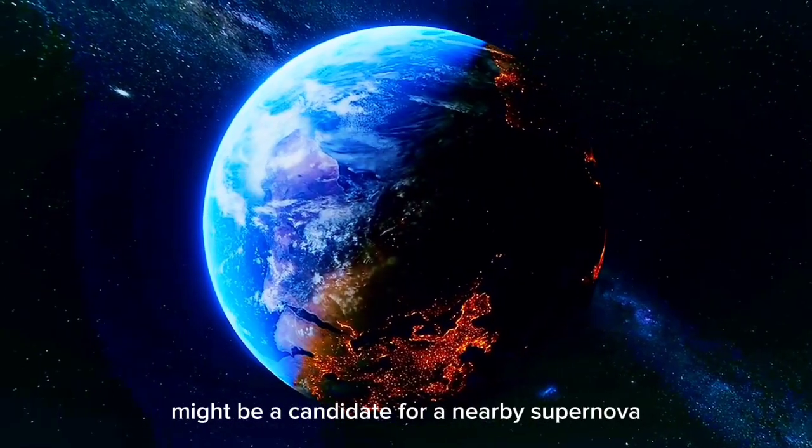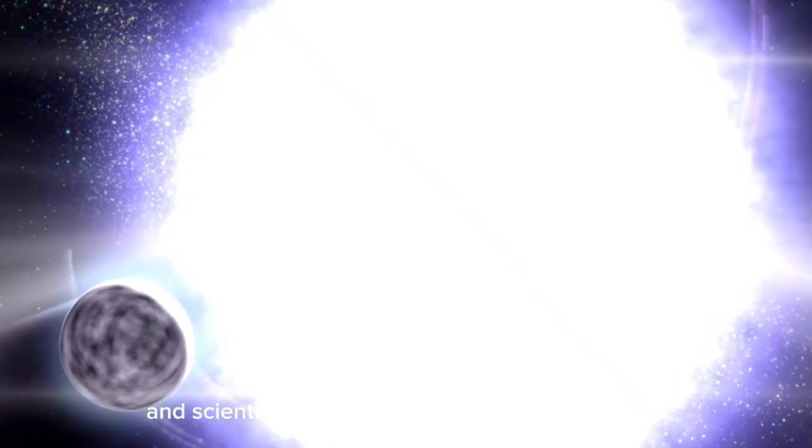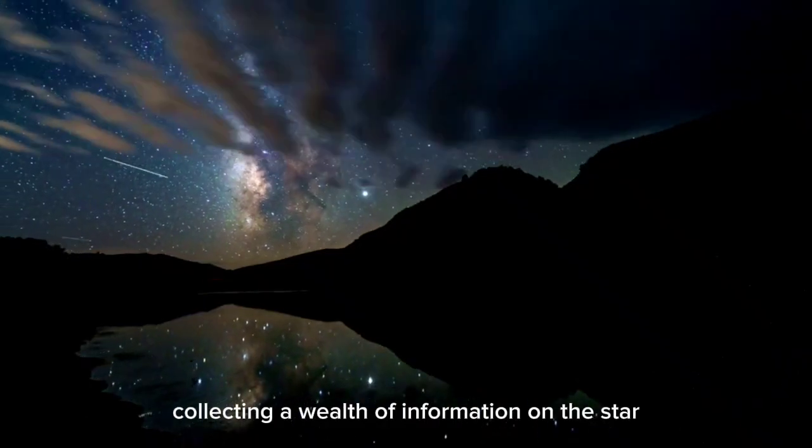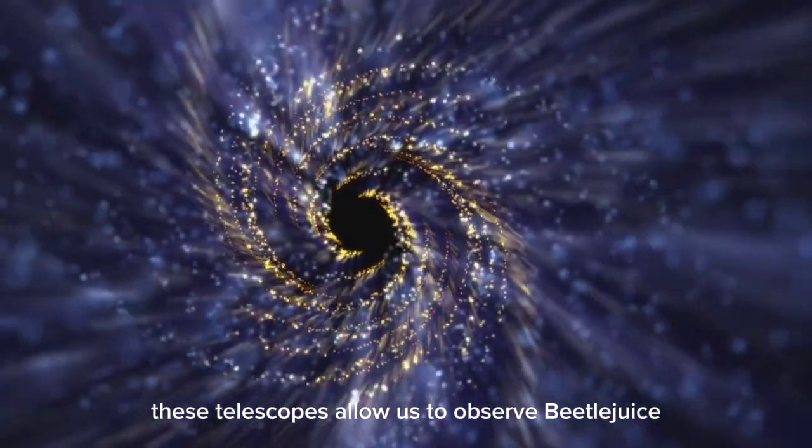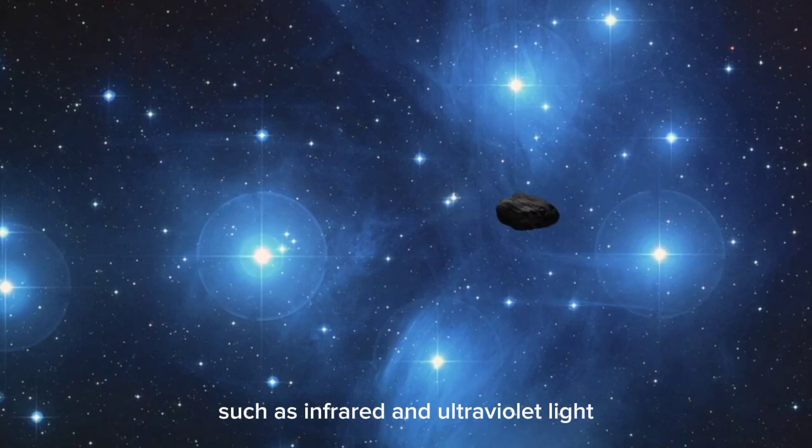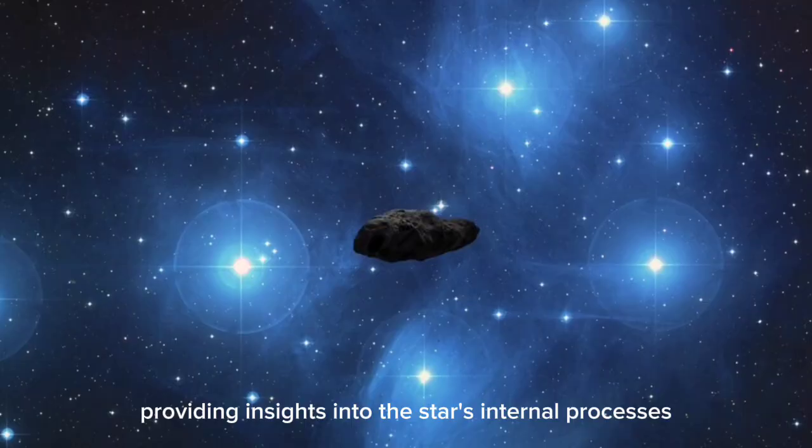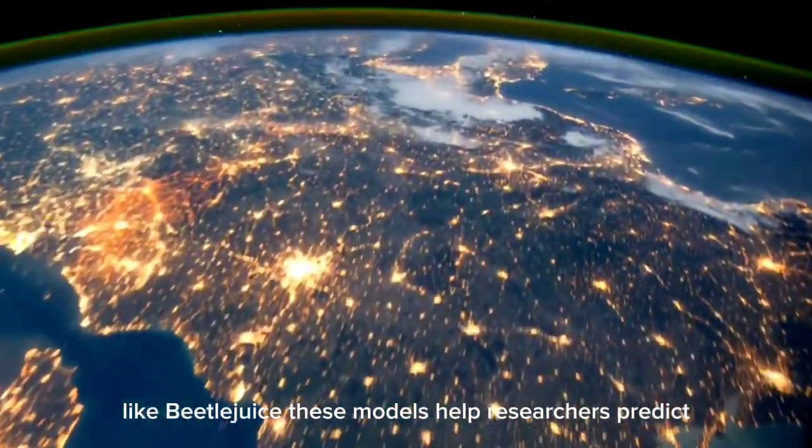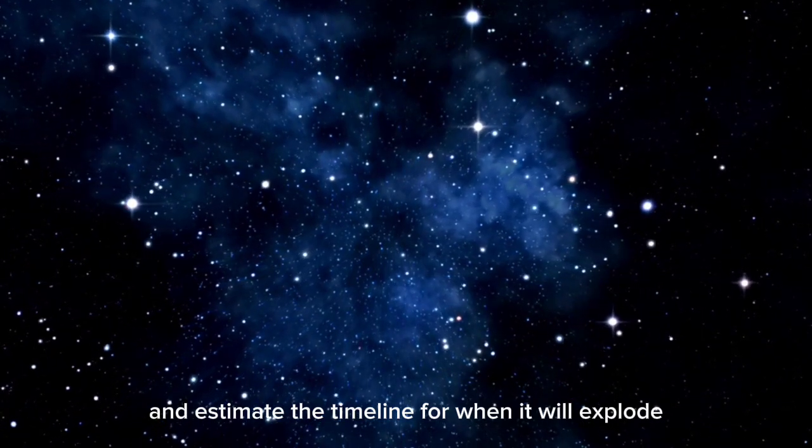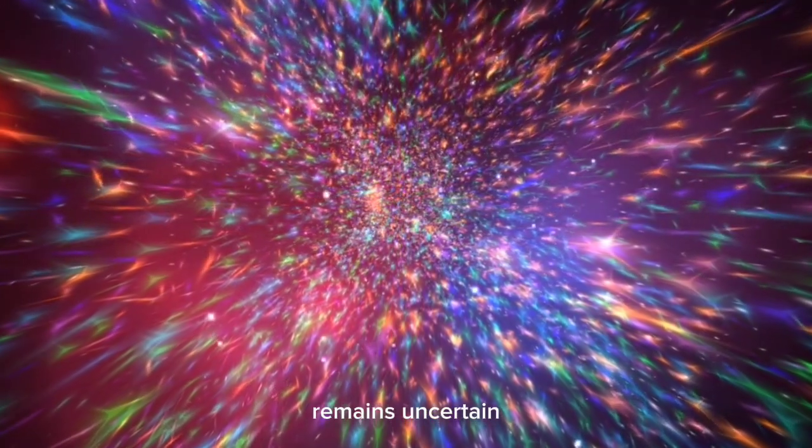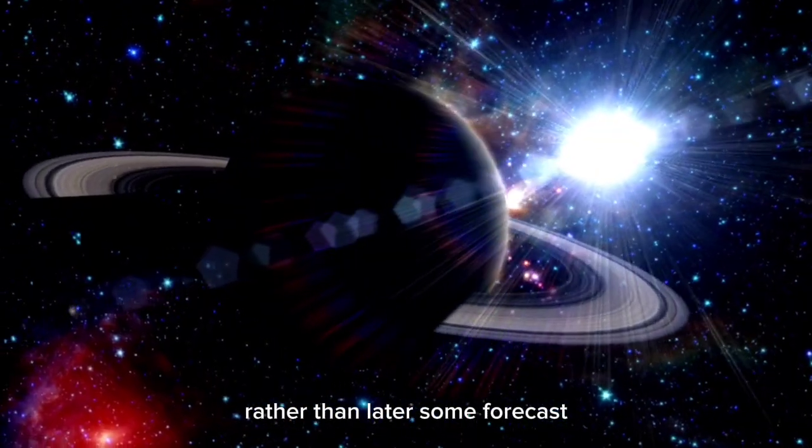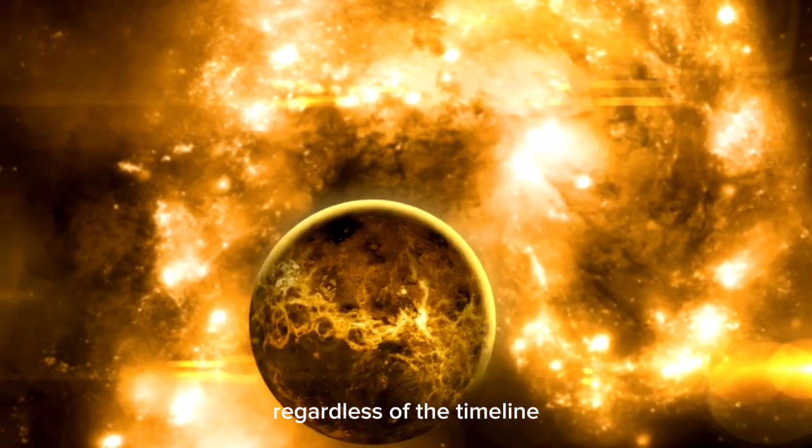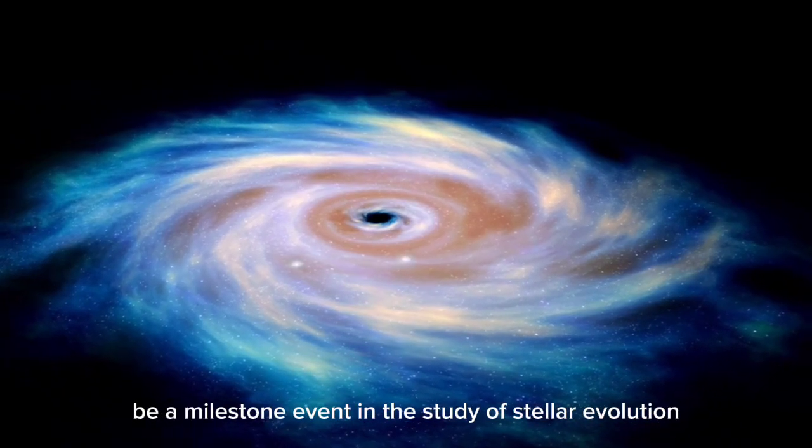The possibility that Betelgeuse might be a candidate for a nearby supernova has drawn the attention of space agencies and scientists worldwide. With current instruments like the James Webb Space Telescope and the Hubble Space Telescope, researchers are collecting a wealth of information on the star. These telescopes allow us to observe Betelgeuse in frequencies that were previously out of reach, such as infrared and ultraviolet light, providing insights into the star's internal processes. Furthermore, scientists are using advanced models to simulate the behavior of massive stars like Betelgeuse. These models help researchers predict the star's future behavior and estimate the timeline for when it will explode. While the exact timing of Betelgeuse's supernova remains uncertain, the current data suggests that it could happen sooner rather than later. Some forecasts indicate that the explosion could occur within the next few years, while others speculate that it could take a few thousand years.